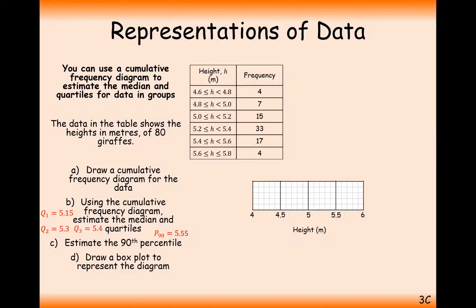So the next thing and the most interesting thing to do is to be able to draw a box plot with this information here. 5.15 is the lower quartile, 5.3 is the median, 5.4 is the upper quartile. Our minimum value is 4.6 and our maximum value is 5.8. So putting all of those markers in, and we've got ourselves a box plot diagram. Nice and easy.